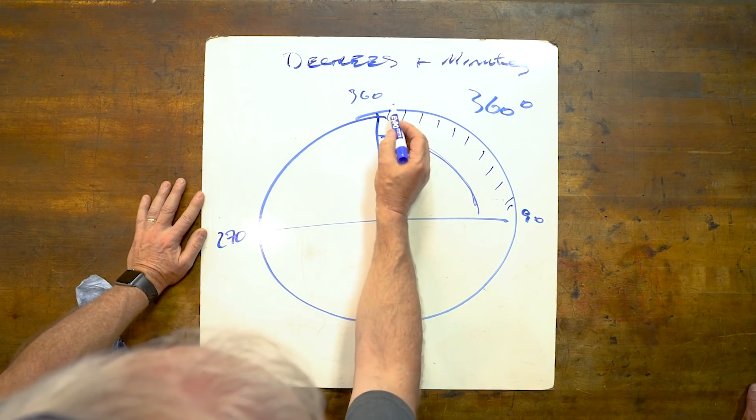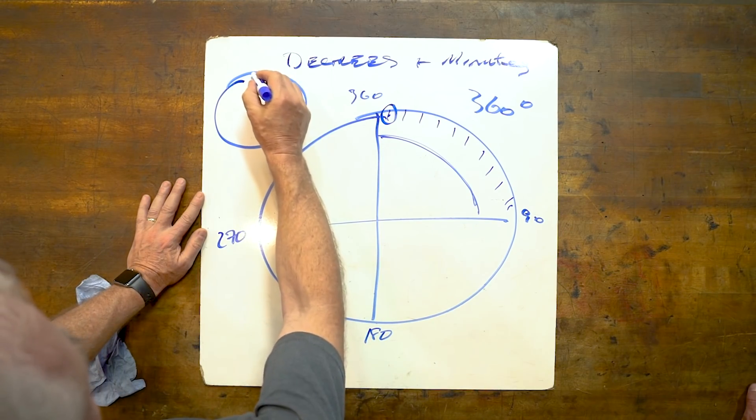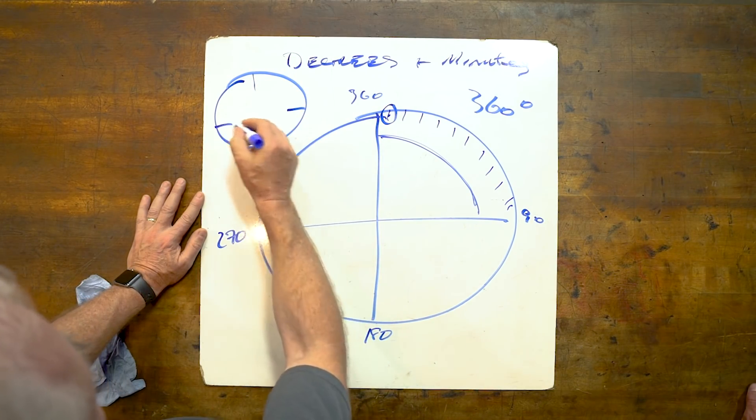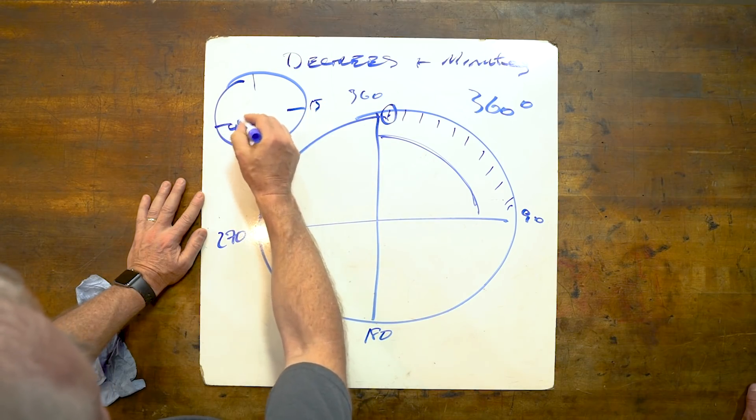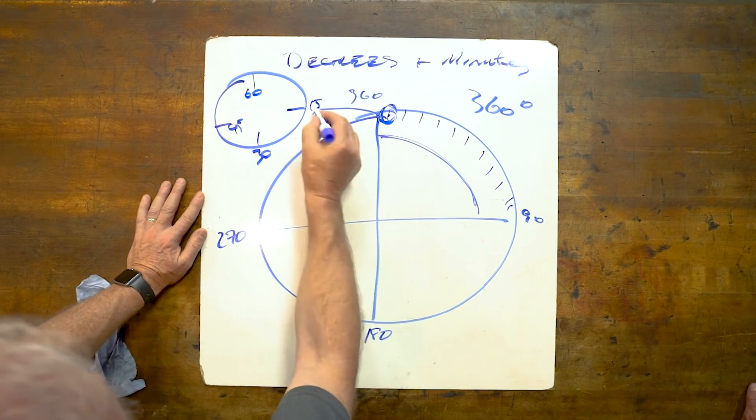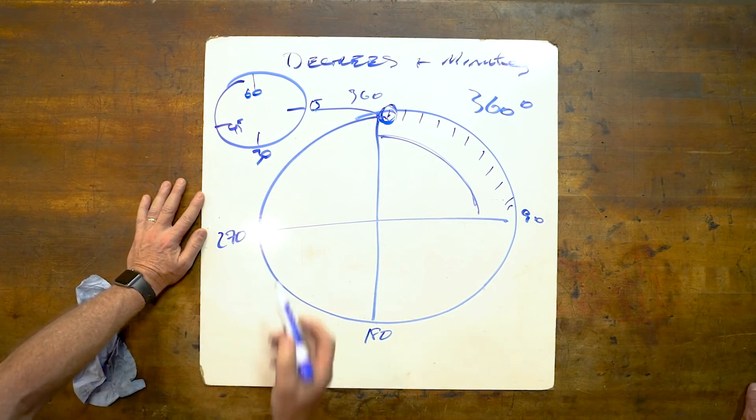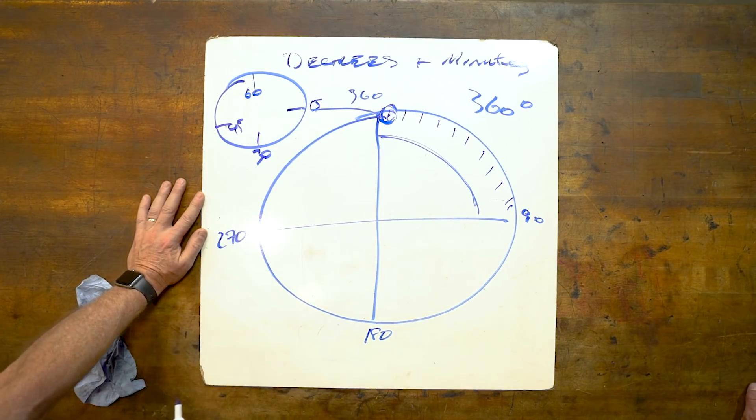Any one of these is a degree. For any given degree, that degree, just like a clock, has 60 minutes. 15, 30, 45, 60. So any one of these degrees has 60 minutes, just like the clock. A quarter after, half, three quarters, one.